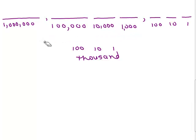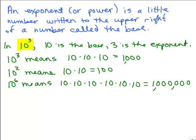Another way of writing these numbers is using exponents. I'm going to preview what an exponent and power is. An exponent or power is a little number written to the upper right of a number called the base. So if you see a 10 here, that's the base, and a little 3 to the upper right — that's called the exponent. 10 with that little 3 means you take the base 10 and multiply it by itself 3 times. So 10 to the 3rd is 10 times 10 times 10, which is 1,000.